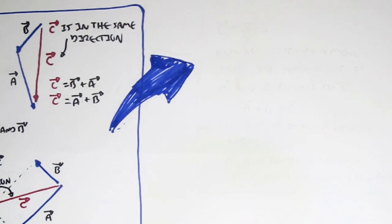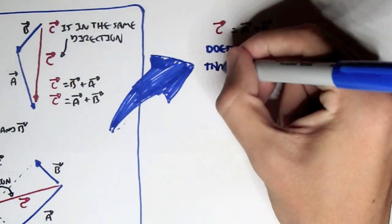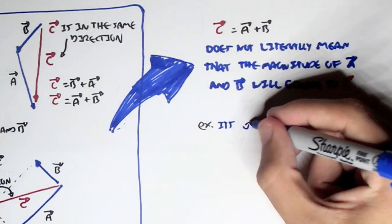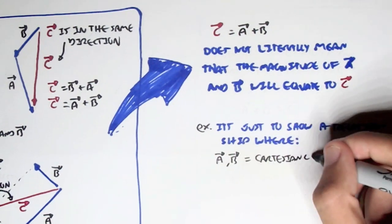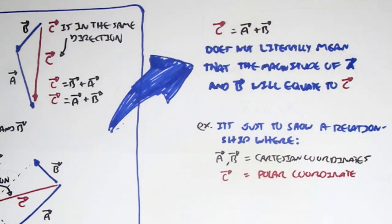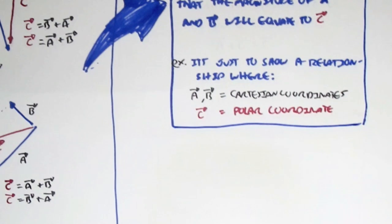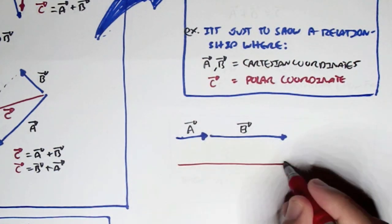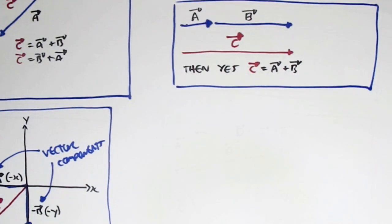When we say c displacement equals a displacement plus b displacement, we don't literally mean the magnitudes of a and b will add up to the magnitude of c — the magnitudes don't simply add up. It's to show a relationship: a and b displacements represent Cartesian coordinates, and c displacement represents polar coordinates — the distance and direction. However, if a and b are travelling in a row (in a straight line), then c is literally equal to a plus b, as in straight-line motion.